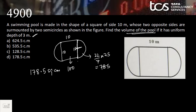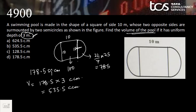The total surface area of the pool is 100 + 78.5 = 178.5 square meters. For the volume we need the depth, which is 3 meters. Volume = 178.5 × 3 = 535.5 cubic meters. That is the volume of water in this pool. Option B is the answer.